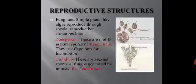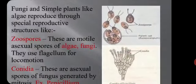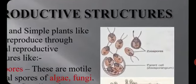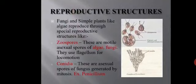In some fungi and simple plants like algae, reproduction occurs through special reproductive structures. The first reproductive structure is zoospores. Zoospores are motile asexual spores that help in reproduction, and are generally seen in algae and fungi. The example of algae which reproduces by zoospores is Chlamydomonas. These zoospores use flagella for their locomotion. The next type of reproductive structure is conidia — these are asexual spores of fungi generated by mitosis.